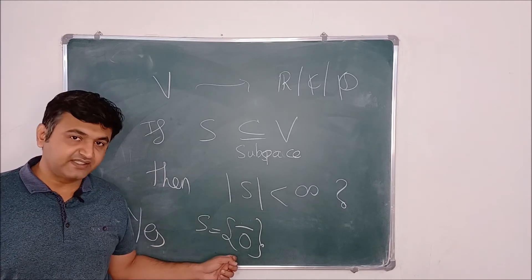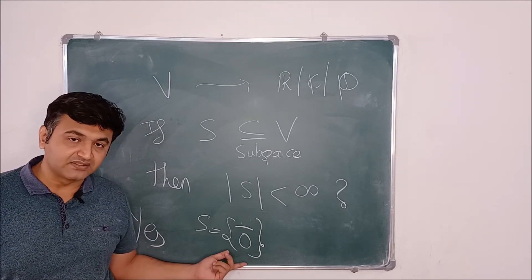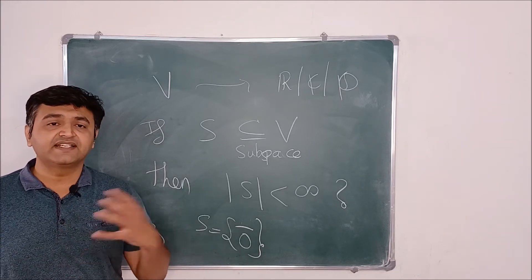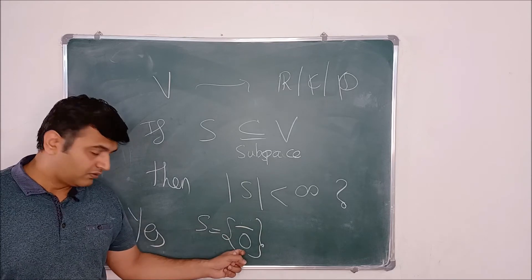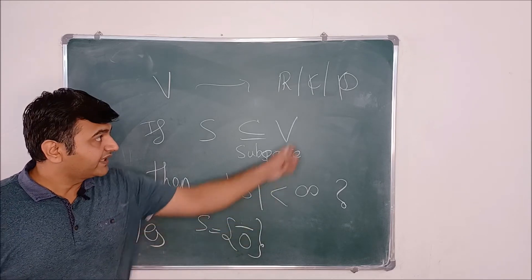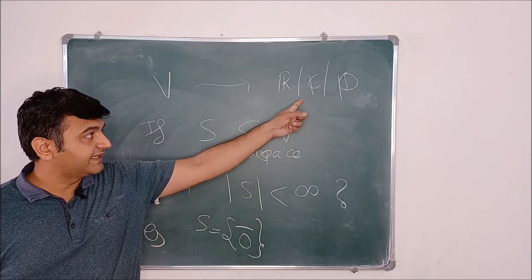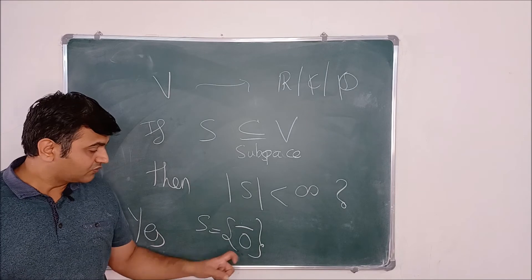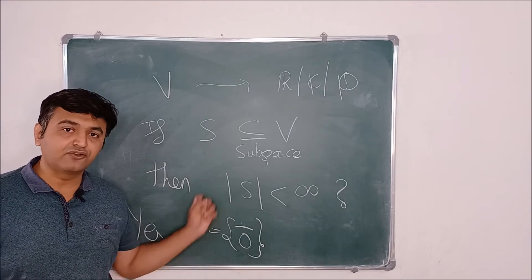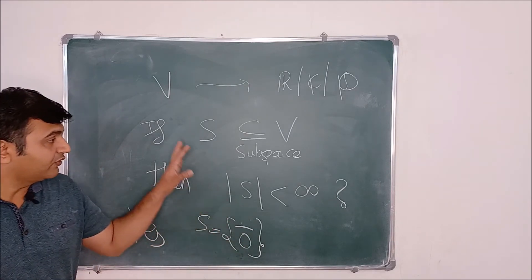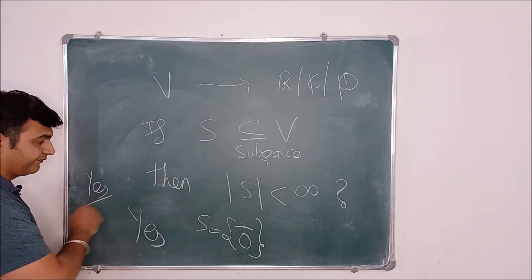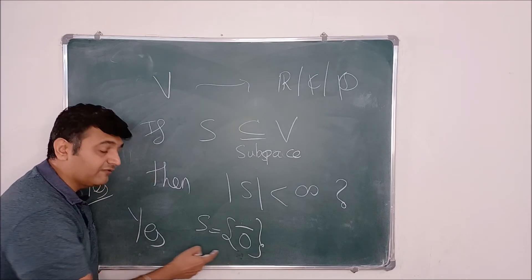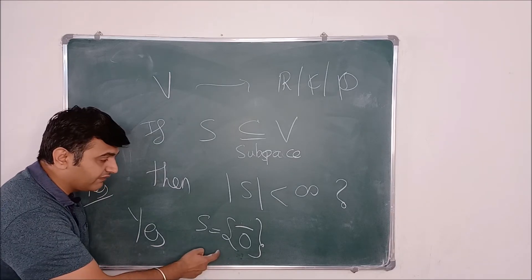If you take any two vectors — but what are the vectors here? Only the zero vector. So if you take the zero vector and the zero vector, what is zero plus zero? It is again zero. If you take a vector and a scalar: the zero vector times any scalar gives you again the zero vector, so it stays in the set. Therefore this forms a subspace. So if I only ask this much, the answer is yes — there does exist a subspace which is a finite set, with only one element.